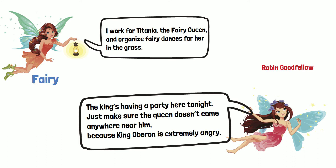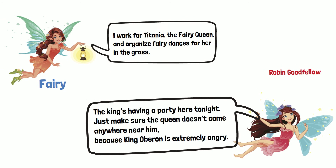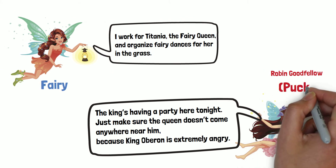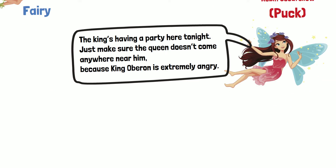Oberon had not forgiven Titania for not giving him a beautiful Indian boy she currently looks after, who Oberon wants to make his personal assistant. Goodfellow then reveals himself as the fairy known more commonly as Puck, famous for being a practical joker amongst the other fairies.